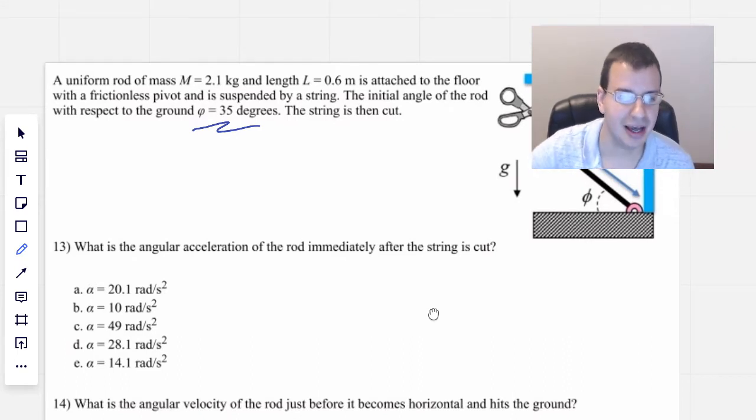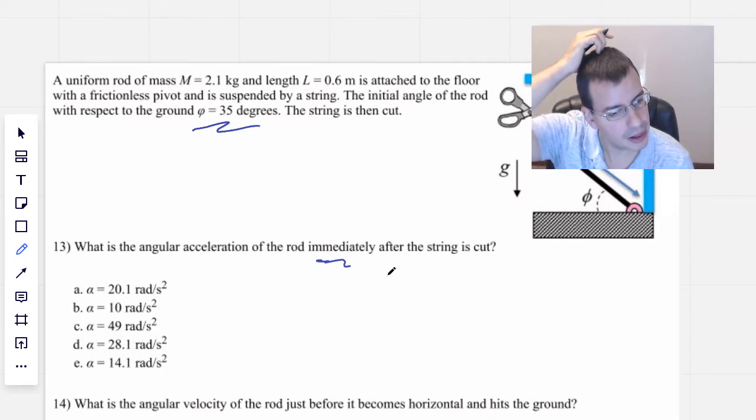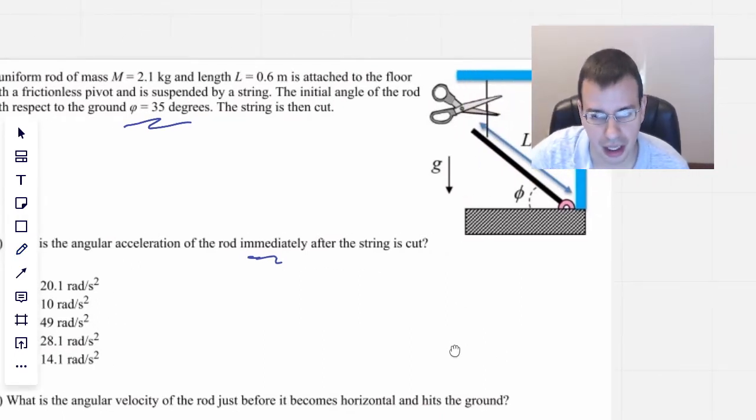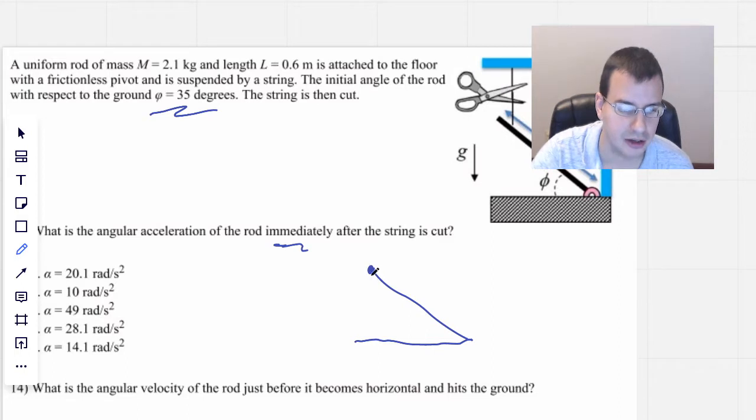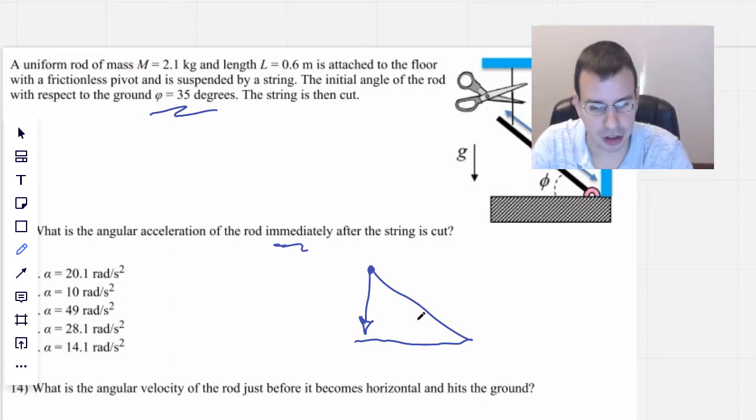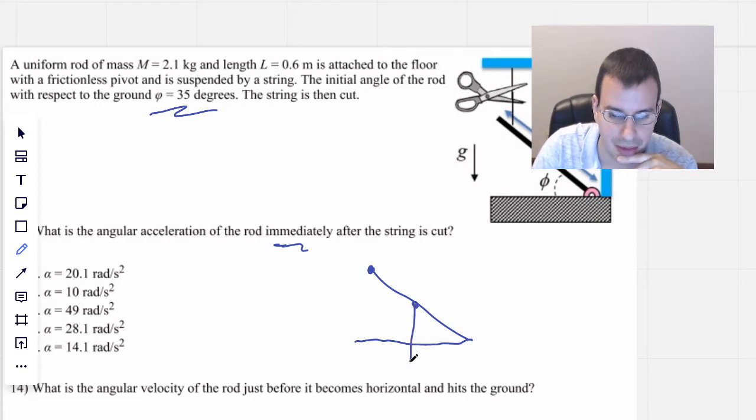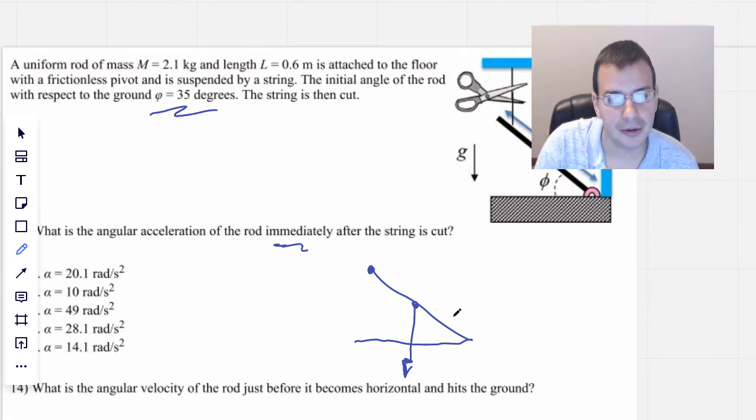What is the angular acceleration of the rod immediately after the string is cut? So we're going to draw a picture here. We have something like this, and this is the rod, and the force is going down that direction. I'm going to draw from the center of mass. The center of mass is going to be in the middle because it's a straight rod. Torque will be R cross F because that's the definition of torque.